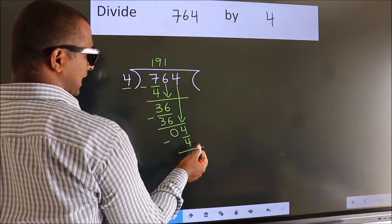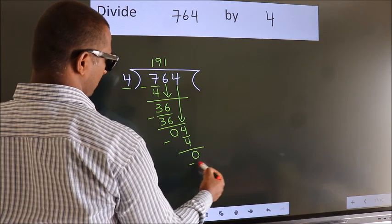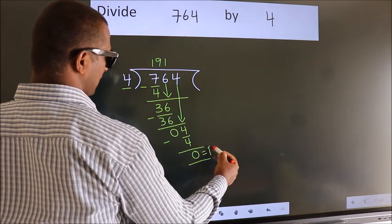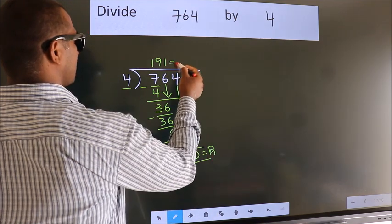No more numbers to bring it down. So we stop here. This is our remainder. This is our quotient.